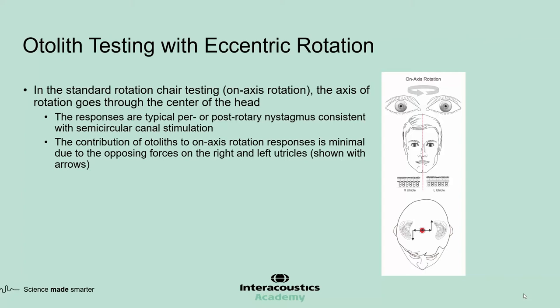Another method for otolith testing is the off-axis rotation chair. In the standard rotation chair testing, the axis of rotation goes through the center of the head, generating typical nystagmus responses consistent with semicircular canal stimulation. The contribution of otoliths during on-axis rotation is minimal because the opposing forces on the right and left utricles usually cancel each other out.